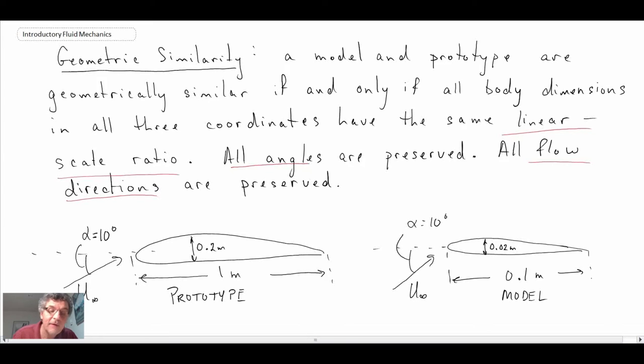What we have on the right is a prototype that might be a full scale system, and then we have a model that we might put within a wind tunnel. You can see all the spatial dimensions scale—the chord length one meter to 0.1, so a scale of 10. The thickness 0.2 down to 0.02, and the angles are preserved as well. The angle between the chord line from the leading edge to the trailing edge and the free stream velocity is 10 degrees in both cases. This would be an example where we have satisfied geometric similarity.